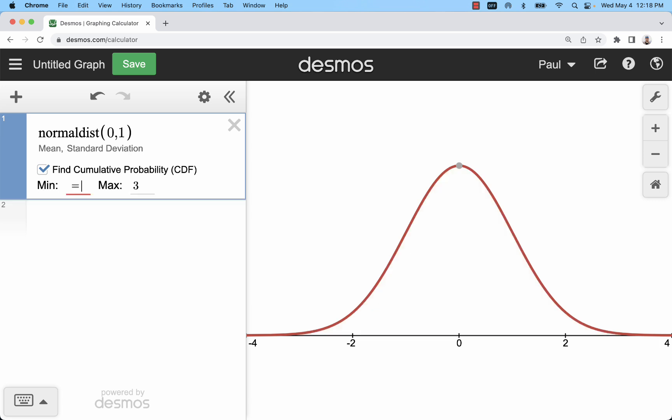Another example is to the left of 2.15. I would put in a max of 2.15. You'll see it shades all the way to negative infinity. Or I could do a right side, for example 3.12.